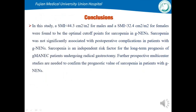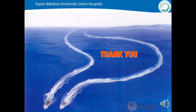In conclusion, SMI less than 44.3 for males and less than 32.4 for females were the optimal cutoff points for sarcopenia in GMA-NEC. Sarcopenia was not significantly associated with postoperative complications in patients with GMA-NEC, but is an independent risk factor for long-term prognosis. Further prospective multi-centered studies are needed to confirm the prognostic value of sarcopenia in patients with GMA-NEC. Thank you for your attention.